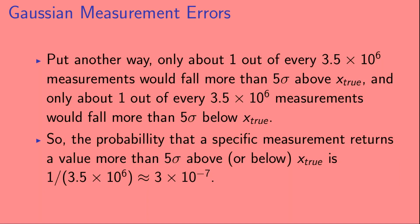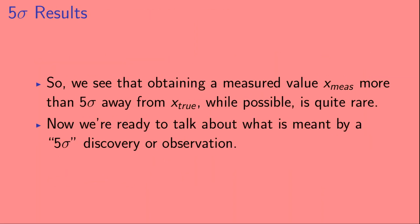Put another way, only about one out of every three and a half million measurements would fall more than five sigma below x_true. So the probability that a specific measurement returns a value more than five sigma above or below x_true is one over three and a half million, which is approximately 3 times 10 to the minus 7. So we see that obtaining a measured value x_meas more than five sigma away from x_true, while possible, is quite rare. Now we're ready to talk about what is meant by a five sigma discovery or observation.